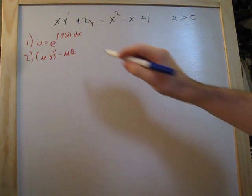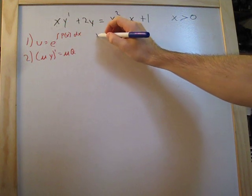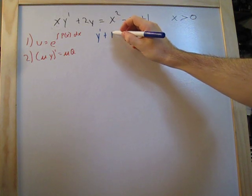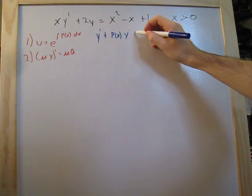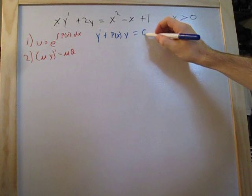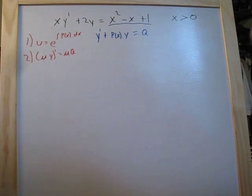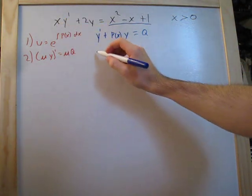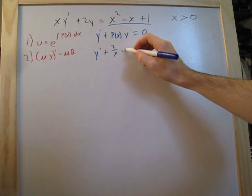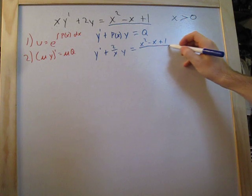The first thing we want to do is get this into standard notation, which means we need to get the x out of here. Standard notation looks like y prime plus p(x) times y equals q, where q is everything on the right side. So when we do that, we get y prime plus 2 over x times y is equal to x squared minus x plus 1, all over x.